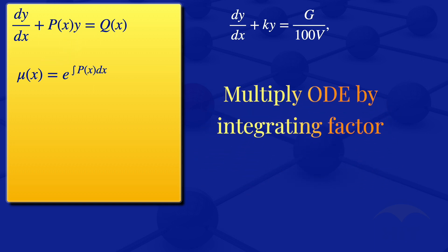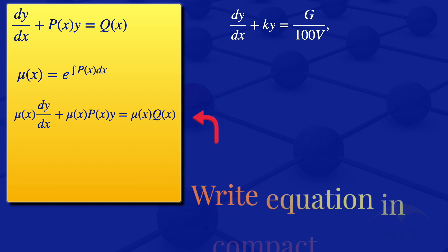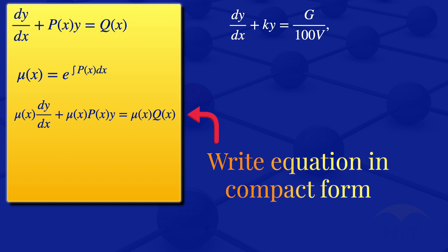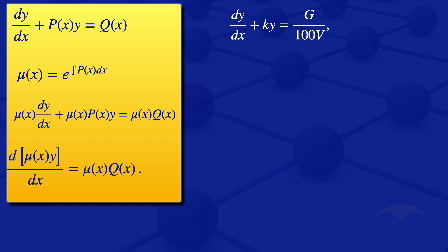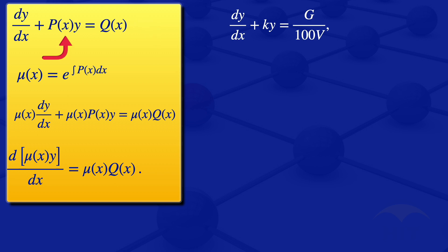We then multiply the given equation by the integrating factor, giving: mu of x times the derivative of y with respect to x, plus mu of x times p of x times y, equals mu of x times q of x. This can be written in compact form as: the derivative of mu of x times y with respect to x equals mu of x times q of x. Comparing with our given equation, the coefficient of y is k, so by comparison p of x equals k.